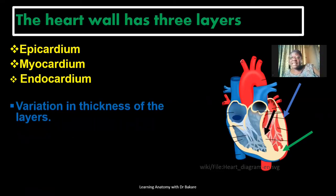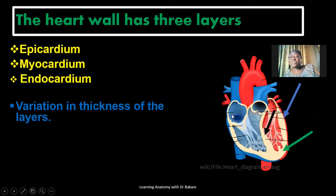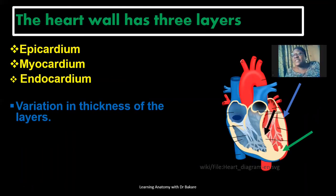Also, the endocardial layer of the atrium is thicker than what is seen in the ventricle. We already established that the myocardial layer of the ventricle is thicker than that of the atrium — this is just to complement the thickness of the ventricle. So the different regions of the heart present different thickness in the sub-layers.